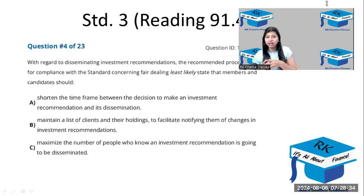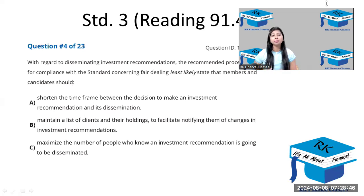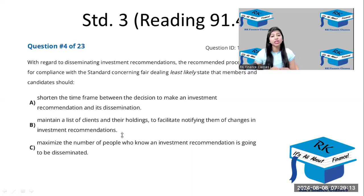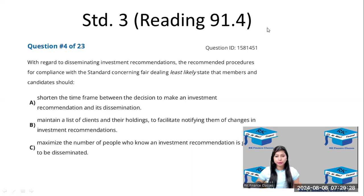For example, if you share your research report with a proofreader unnecessarily, you are including one more person who will become aware of the recommendation. That is not a recommended practice — your recommendation should go to your client first. You should minimize the number of people aware of the recommendation; only those who are part of the research report should know about it. Therefore, option C is the answer — it should have been 'minimize the number of people,' not maximize.